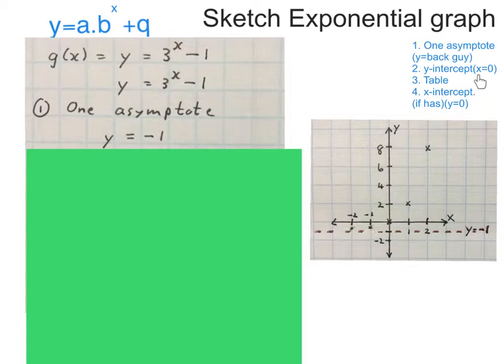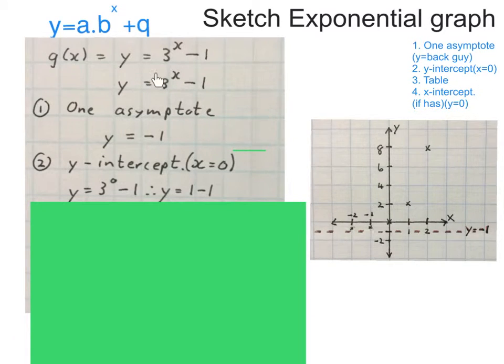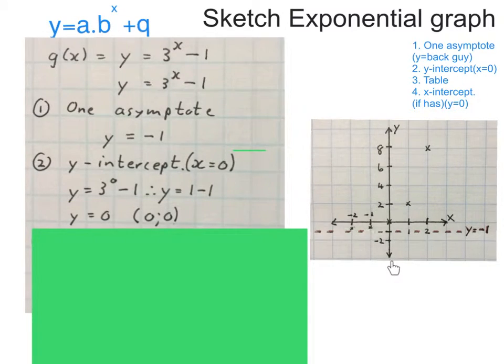The next thing we work out is the y-intercept by making x zero. We take our original equation, rewrite it, and make the x zero. So I've got y = 3^0 - 1. Use your calculator extensively. 3^0 is 1, 1 - 1 will then give you zero.